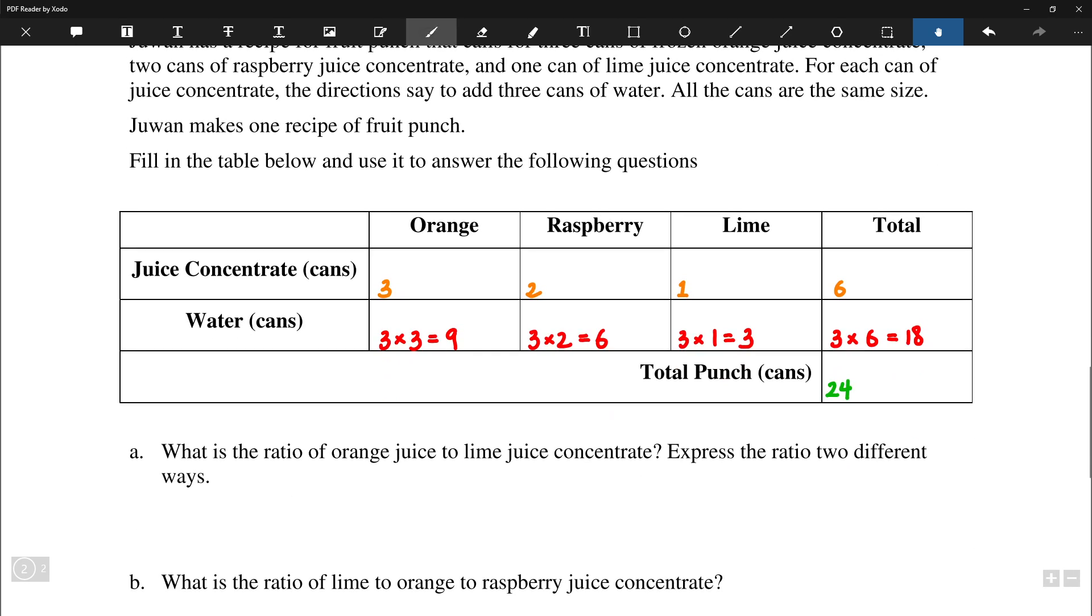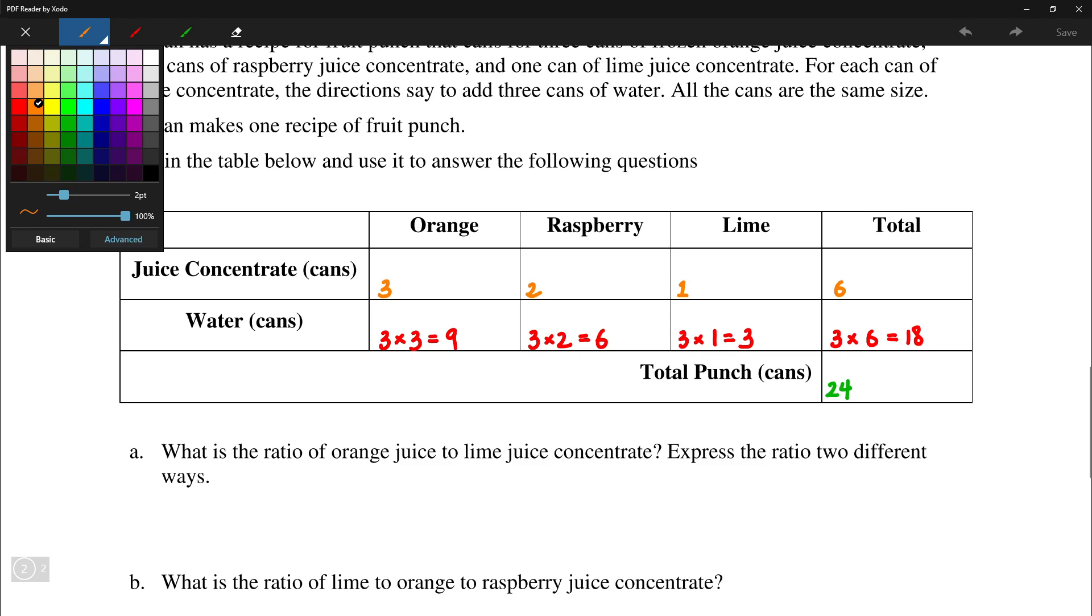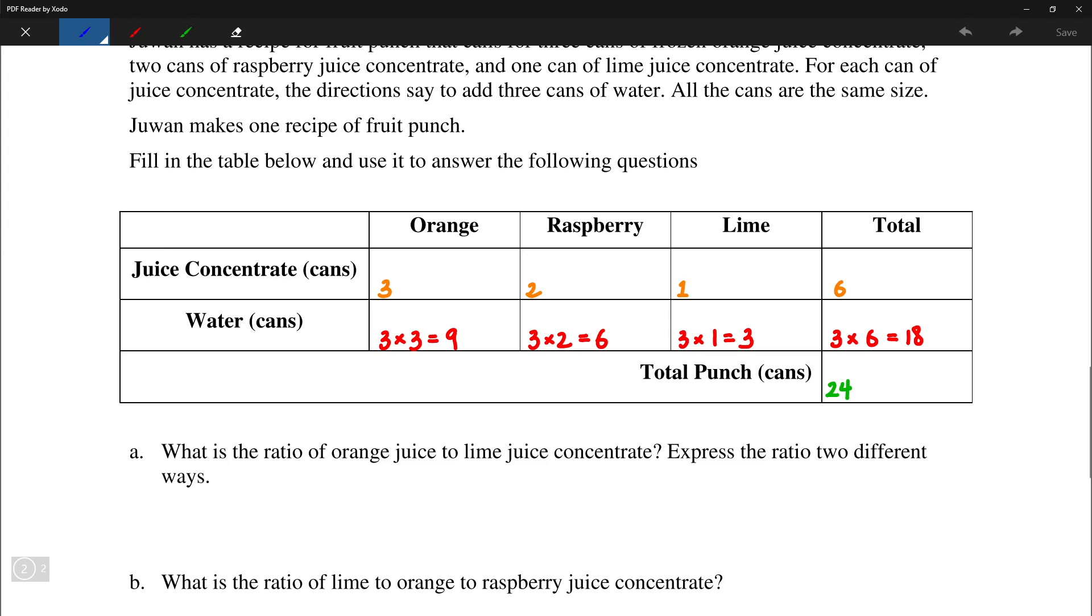Orange juice to lime juice concentrate, that is simply 3 to 1. You can also write it as in words, so 3 to 1.